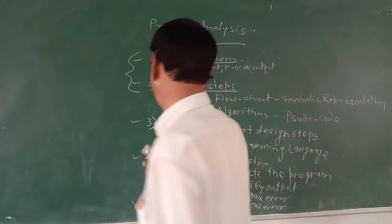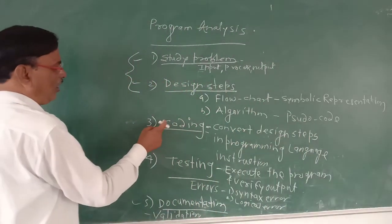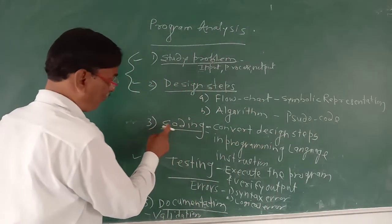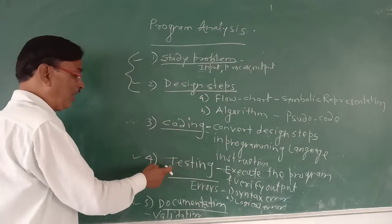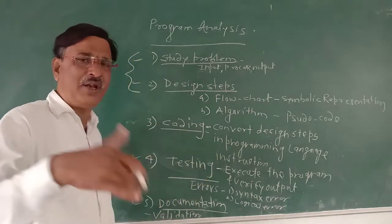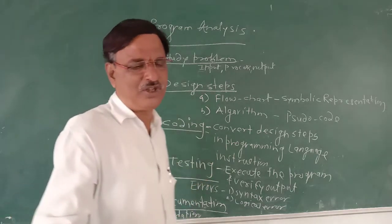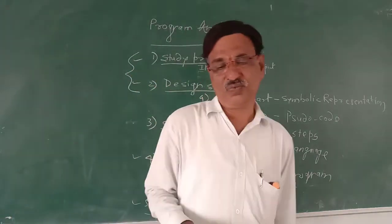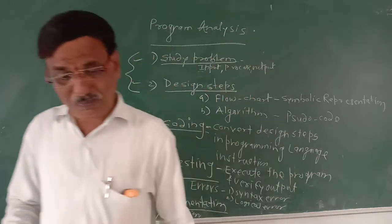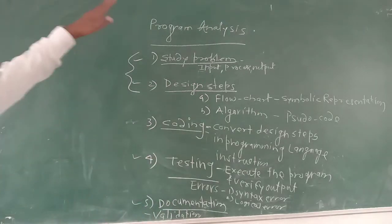Coding is the step for which a PC or computer is required - you write down the program. Testing is the step where you verify the program. Documentation is also there. So these are the five steps of program analysis.